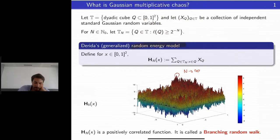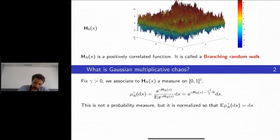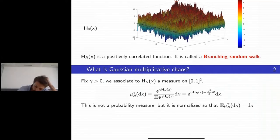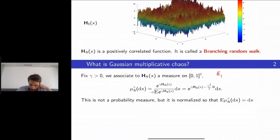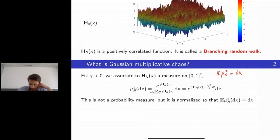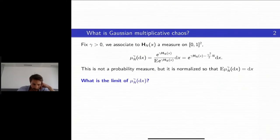Derrida was the first to look at this branching random walk as a random energy model. What he did — as a physicist — was take the exponential of gamma times the function, giving a sort of Gibbs measure associated with the energy; you should think of gamma as an inverse temperature. You need to renormalize, and one way to do it is to divide by the expectation, so that the expected value of μ_n^γ is just dx, the Lebesgue measure.